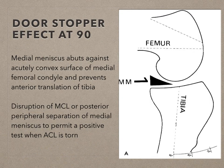I would like to bring to your notice the door stopper effect at 90 degrees produced by the medial meniscus. The medial meniscus abuts against the acutely convex surface of the medial femoral condyle and prevents anterior translation of the tibia. Disruption of the MCL or posterior peripheral separation of the medial meniscus is necessary to permit a positive test when the ACL is torn. This may be one of the weaknesses of the test.